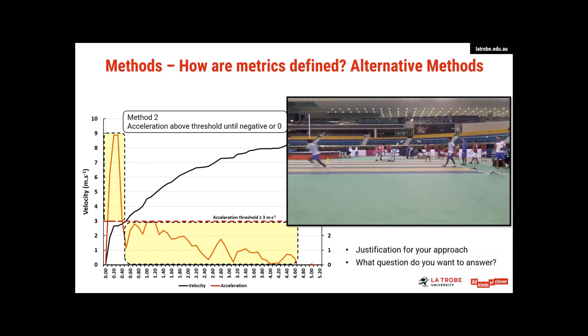These alternative methods are fine. I don't think one's right and one's wrong, but you need justification for the approach you're taking. And as I said, you need to know what do you want this to be able to answer? So for example, this second approach, I wouldn't really look at from a workload point of view. I would look at it if I wanted to know about an acceleration effort and try and give it context in terms of match actions or technical factors that people are performing.